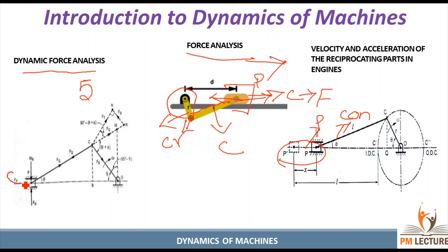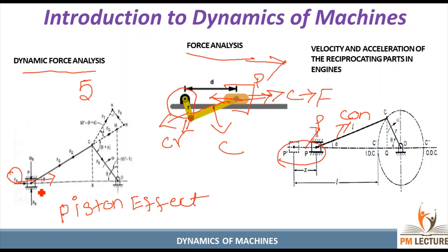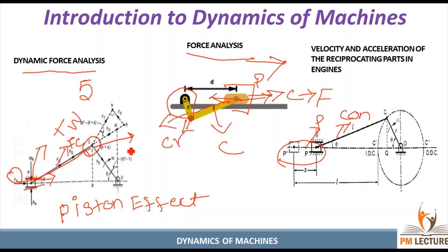Five forces act. The first is the piston force — also called the piston effect — which is the force created by the travel of the piston in the cylinder. We also have the thrust valve force. Again, the force will be transmitted to the crank pin. The force will also be transmitted to the bearing.